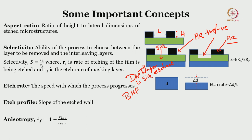Etch rate is the speed with which the process progresses — how fast the material is etched from a given thickness of substrate. Etch profile is the slope of the etch wall. Anisotropy (N-isotropy) is defined as 1 minus the ratio of lateral etch rate to vertical etch rate, quantifying how much lateral etching occurs versus vertical etching.